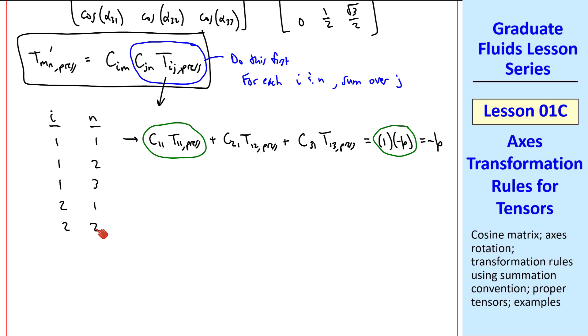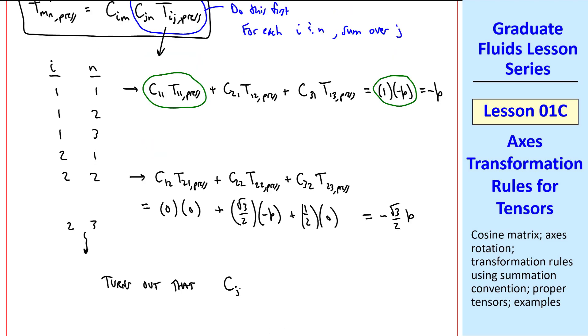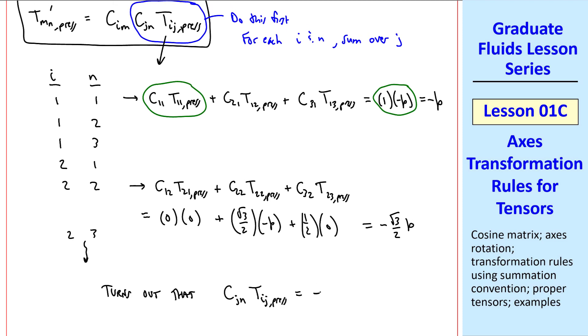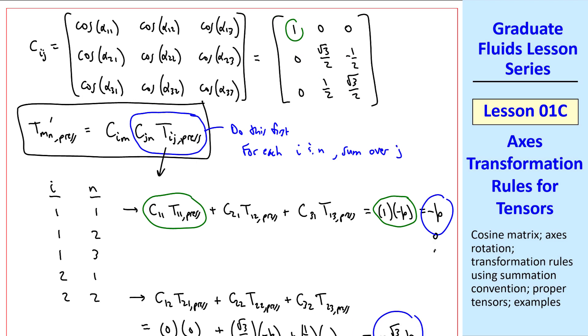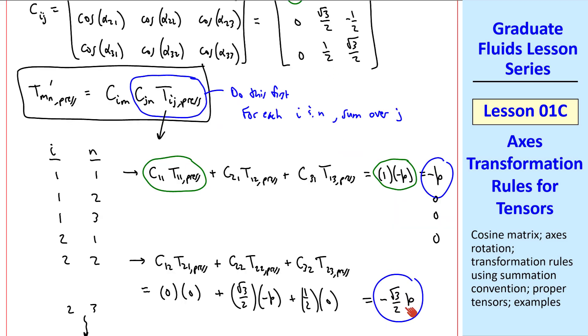I'll do the case for i equal 2 and n equal 2. Again, just this blue portion gives us these three terms when we sum over j, and when we plug in our values, we get negative square root of 3 over 2 times pressure. If you continue this for all the cases, you quickly see a pattern. Namely, it turns out that this term that we circled and blew up here simplifies to negative c_In times p, where these terms follow the same pattern as the cosine matrix itself. So this term is 0, 0, 0, 0, 0, 0, square root of 3 over 2 times negative p, etc.